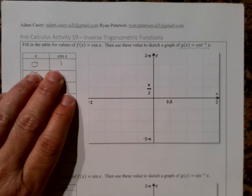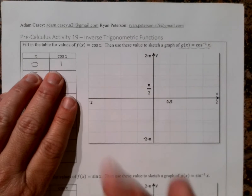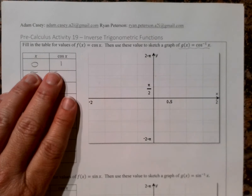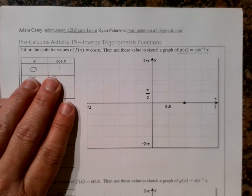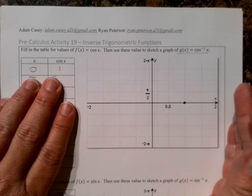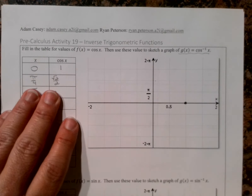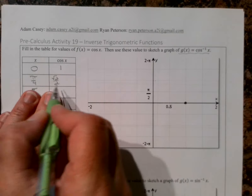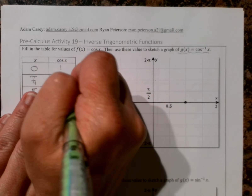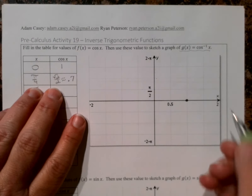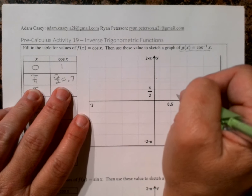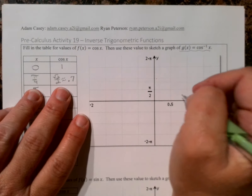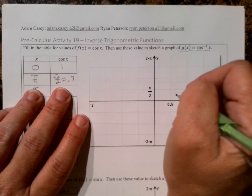Let's start with 0, 1 — that's the x, y for cosine x. If I flip them, that point becomes 1, 0. Graphing this will feel a little awkward because we're not plotting points from left to right; we're following this table. For pi over 4, square root of 2 over 2 — we'll use the approximation 0.7 — so the input is 0.7 and the output is about 0.4, placing pi over 4 about here.